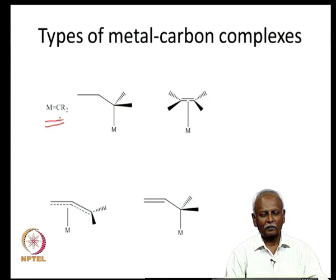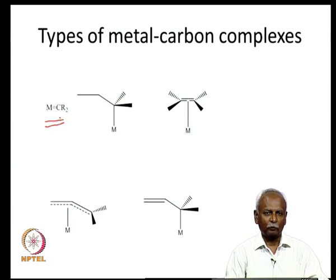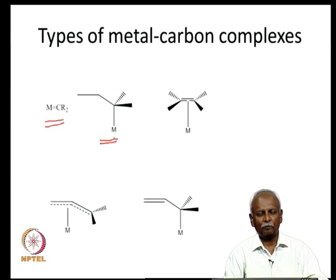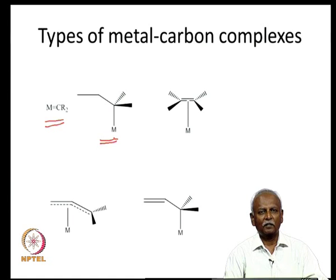Following that, we also discussed metal alkyl complexes. These are complexes where there is a metal-carbon sigma bond and there is no formal pi bond between the carbon and the metal. These are typified by the example given here — any metal alkyl compound represents a case where you have only a sigma bond between the organic ligand and the metal.